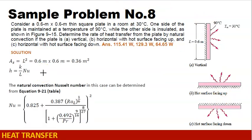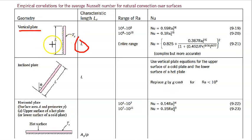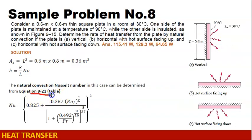For case 1, when the plate is in the vertical position, the Nusselt number can be calculated using equation 9-21 from the table on page 76. For a vertical plate, the characteristic length is equal to the height of the plate. The Rayleigh number ranges apply, and we can use the Nusselt number equations accordingly. The third equation, equation 9-21, is our Nusselt number formula for a vertical plate.